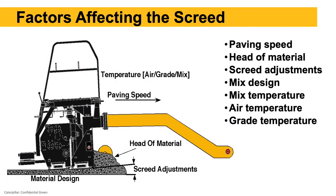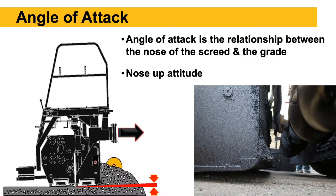The factors affecting the screed — looking at a schematic showing the screed and the tow arm connected at a pinned connection to the tractor — include paving speed, head of material (the amount of mix in front of the face of the screed), screed adjustments we can make, the mix design, mix temperature (the hotter the mix, the easier it flows underneath the screed), air temperature, base temperature, and angle of attack of the screed.